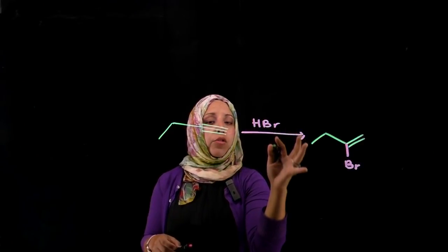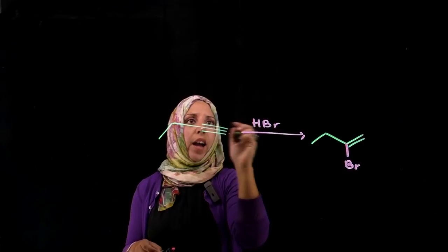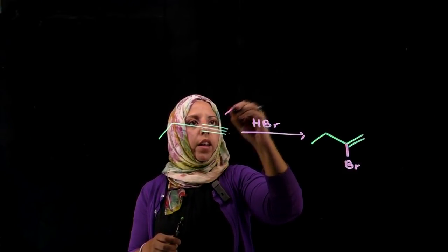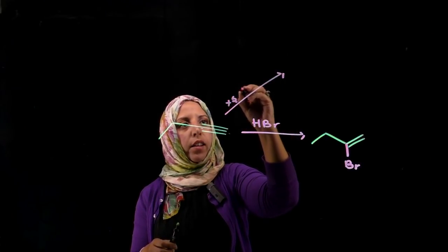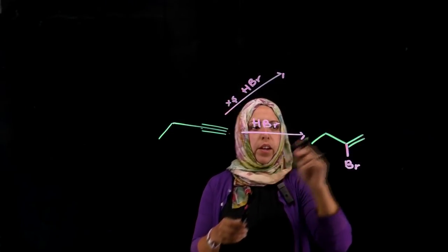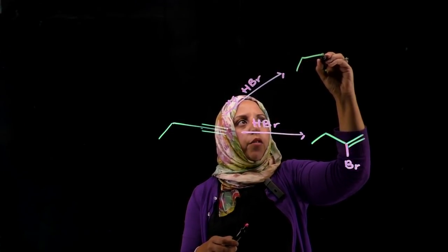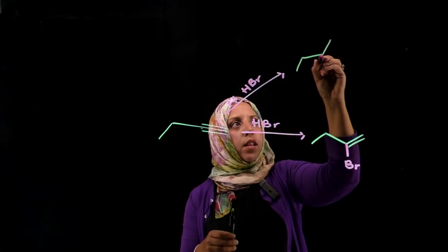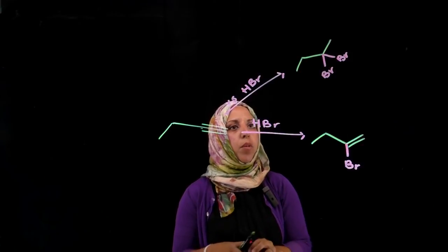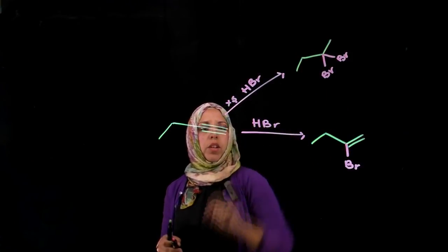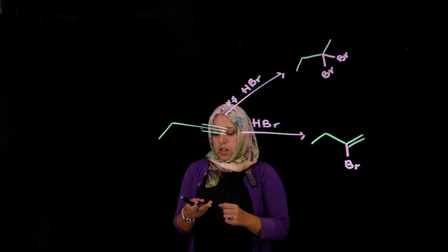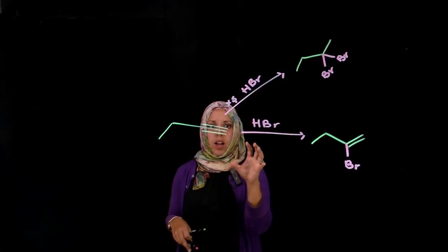If we end up adding two equivalents — or an excess amount — of hydrogen bromide, then we get rid of both pi bonds, and we're adding both bromines to the more substituted end of that carbon-carbon double bond. It's like you went from here to here. So that's hydrohalogenation.